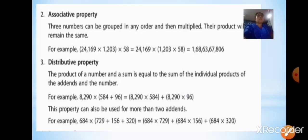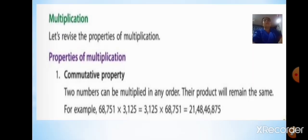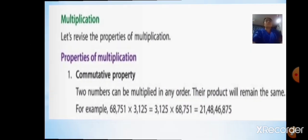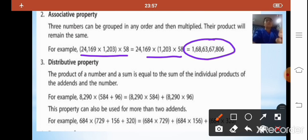The second property is the associative property: three numbers can be grouped in any order and then multiplied, and their product will remain the same. For the distributive property, the product of a number and a sum is equal to the sum of the individual products of the addends and the number. As shown in the example, you can multiply the number by each addend separately and then add the results to get the same answer. This property can also be used for more than two addends.